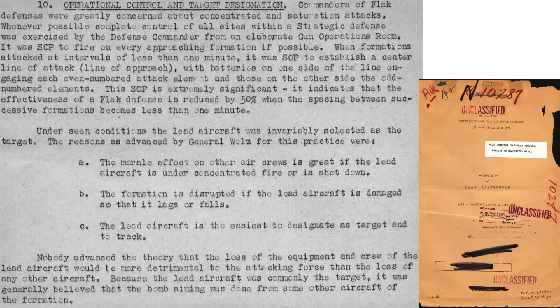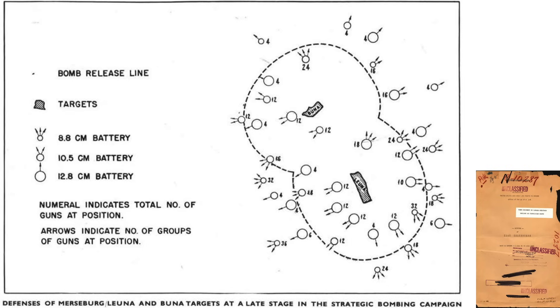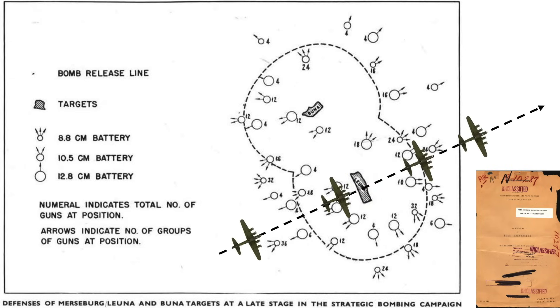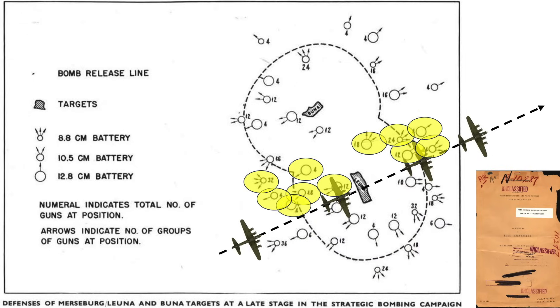The Germans' response to saturation tactics are described on this page. Bombers' saturation attacks were of great concern. If a saturation attack was expected to occur, the flak defense commander would orchestrate the gun's firing order. If the formation's trail was at or under 1 minute in duration, the guns on one side of the bomber's line of approach would engage the even formations, whereas the flak guns on the opposite side would engage the odd formations. This map shows the flak batteries protecting a German target, with batteries on each side attacking alternating trail formations.